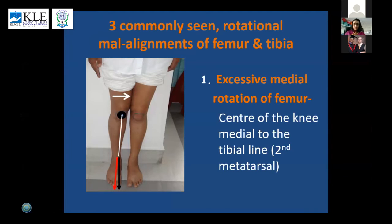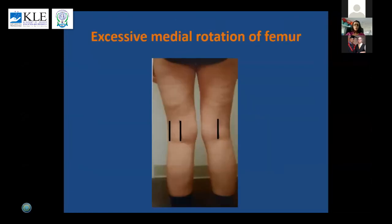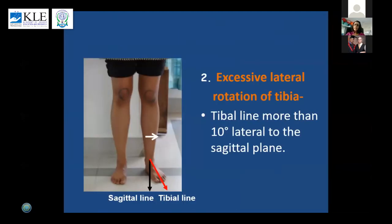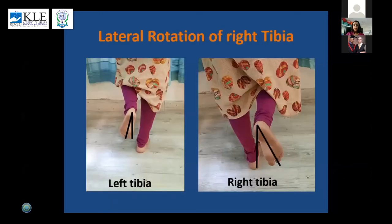There are three common malalignments of the tibia and femur. First, excessive medial rotation of the femur, where the center of the knee is medial to the second metatarsal. Viewed from the back, the lateral insertion of the hamstrings is barely visible, especially in the right leg. Second, excessive lateral rotation of the tibia, where the tibial line is more than 10 degrees lateral to the sagittal plane. Lateral rotation of the tibia can also be detected in the swing phase — in some patients the right tibia is much more laterally rotated than the left.